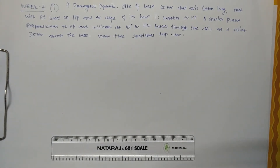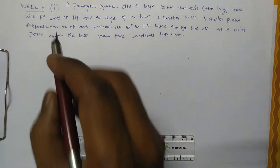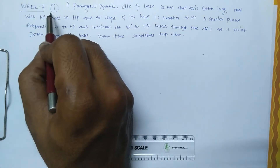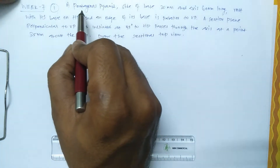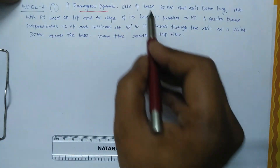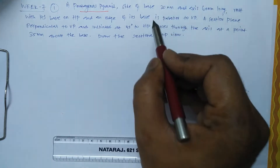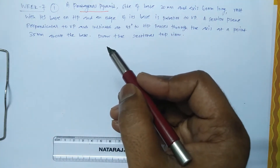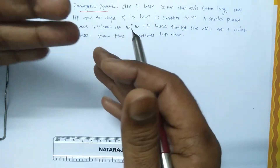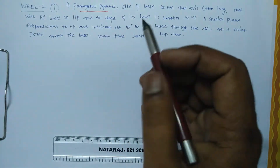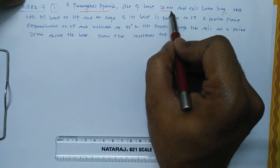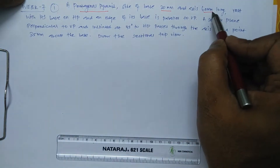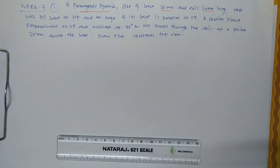Hello students. This class is week number seven, tutorial number one. The problem is a pentagonal pyramid. This is about sections — when you are projecting solids, if you are sectioning, that means you are cutting it. The pentagonal pyramid has sides of base 30 mm and axis 60 mm long.